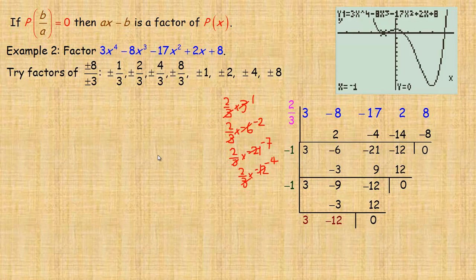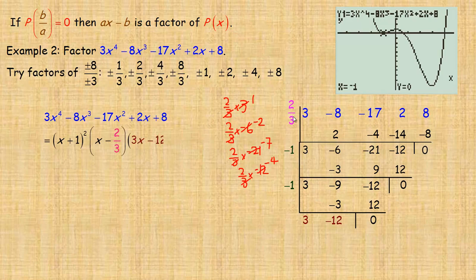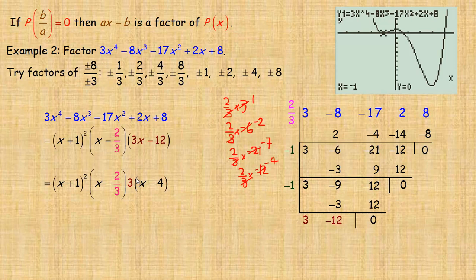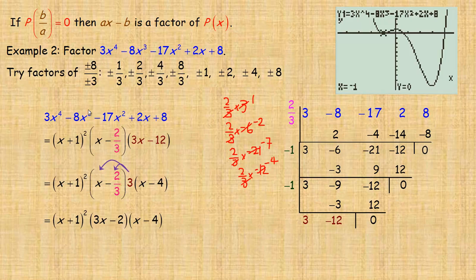All three synthetic divisions gave remainder zero. Writing out the factors: the two occurrences of negative 1 imply x plus 1 is a factor twice, so we write x plus 1 squared. Two-thirds works, giving x minus two-thirds. And 3x minus 12 is the remaining factor. We don't want a fraction, so factor a 3 out of 3x minus 12 to get 3 times (x minus 4), and expand that 3 into x minus two-thirds to get 3x minus 2. The completely factored form is (x plus 1) squared times (3x minus 2) times (x minus 4).